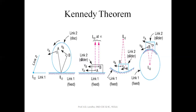There are three types of ICRs. One is fixed ICR. Second is permanent ICR. And third is neither fixed nor permanent. In the next slide, we will see which types apply.